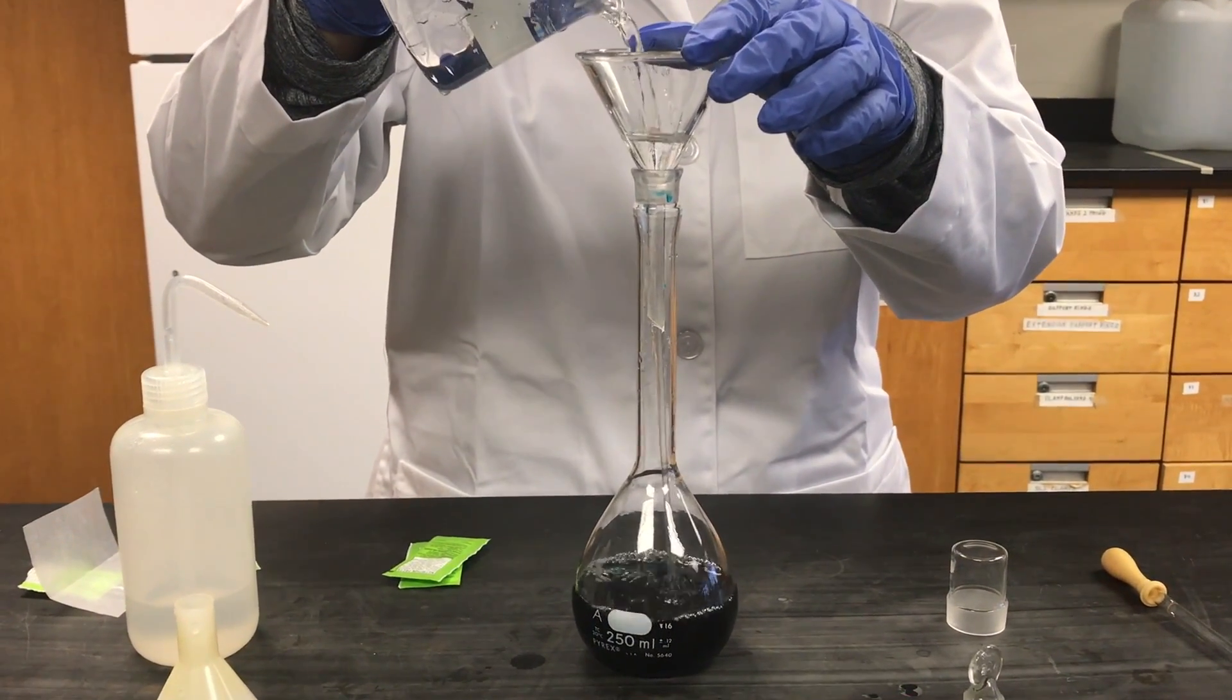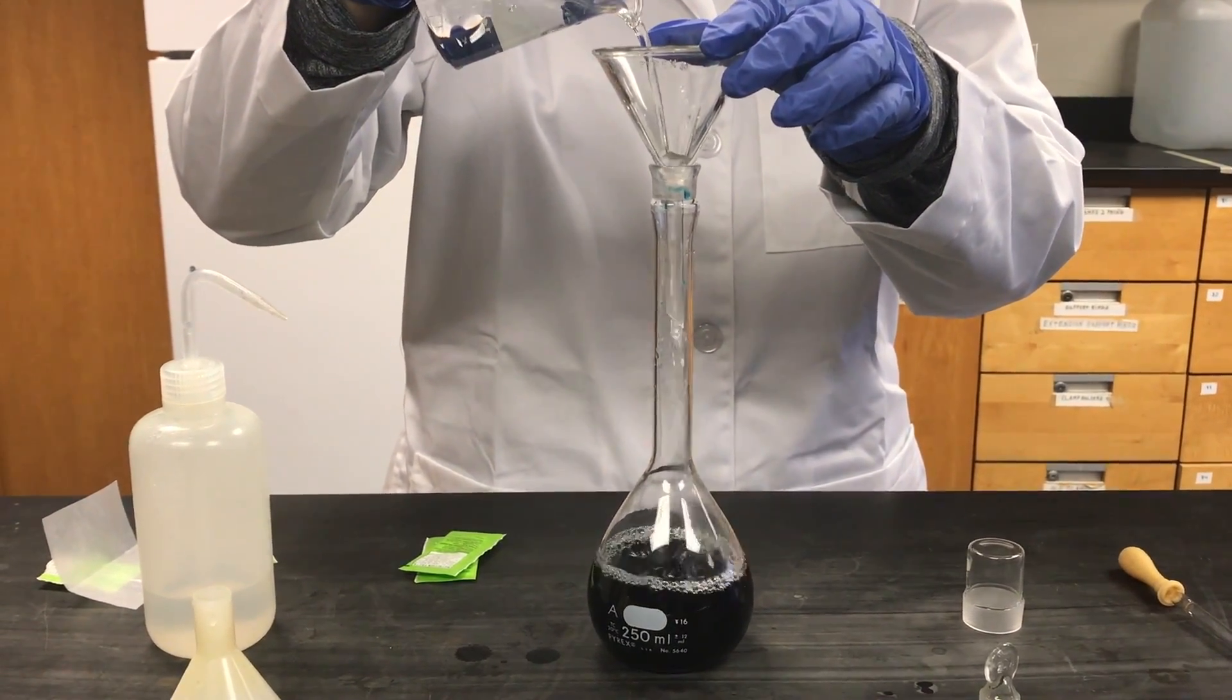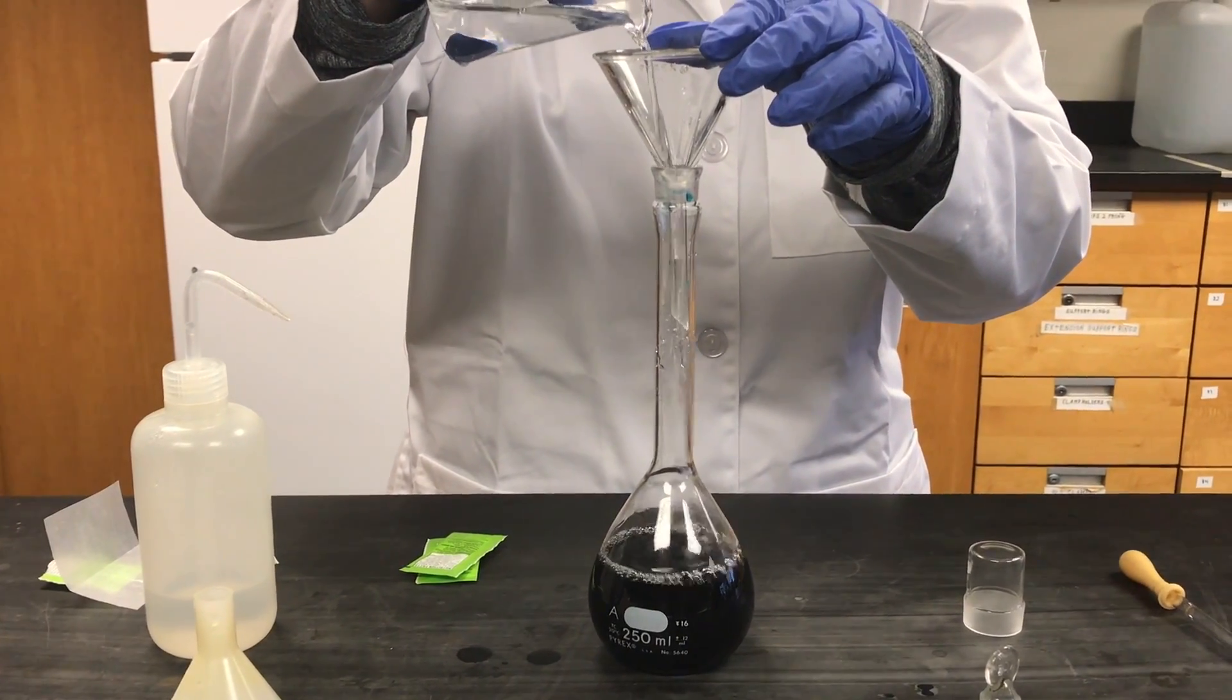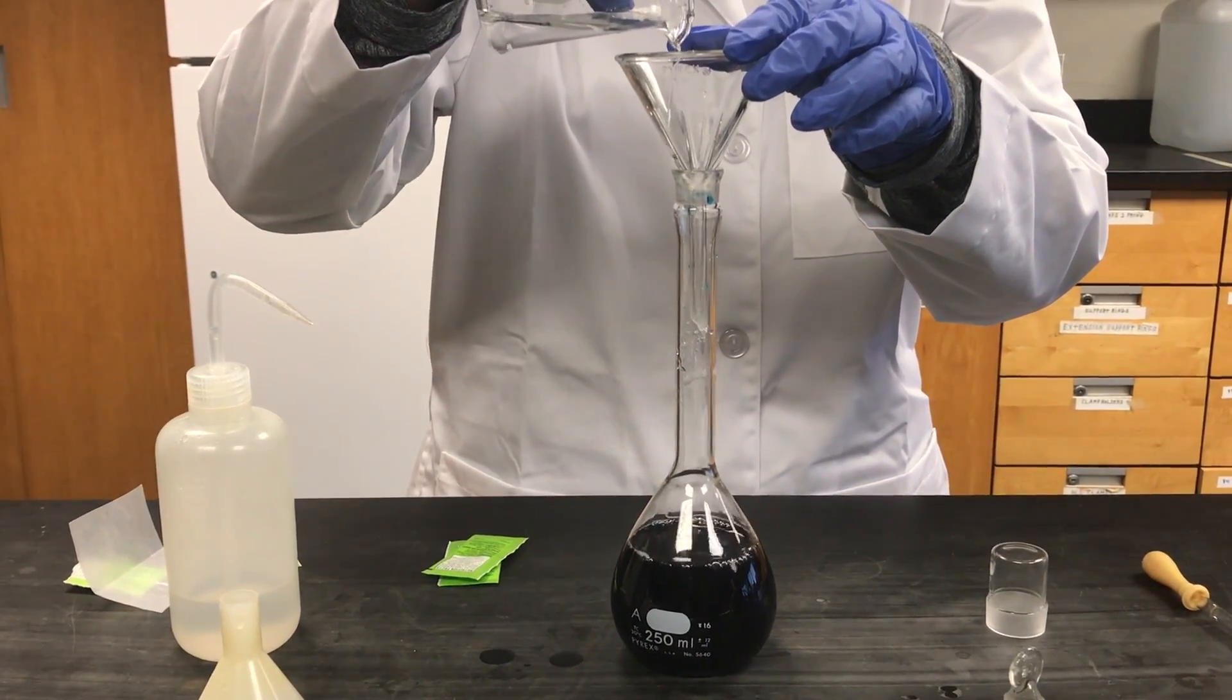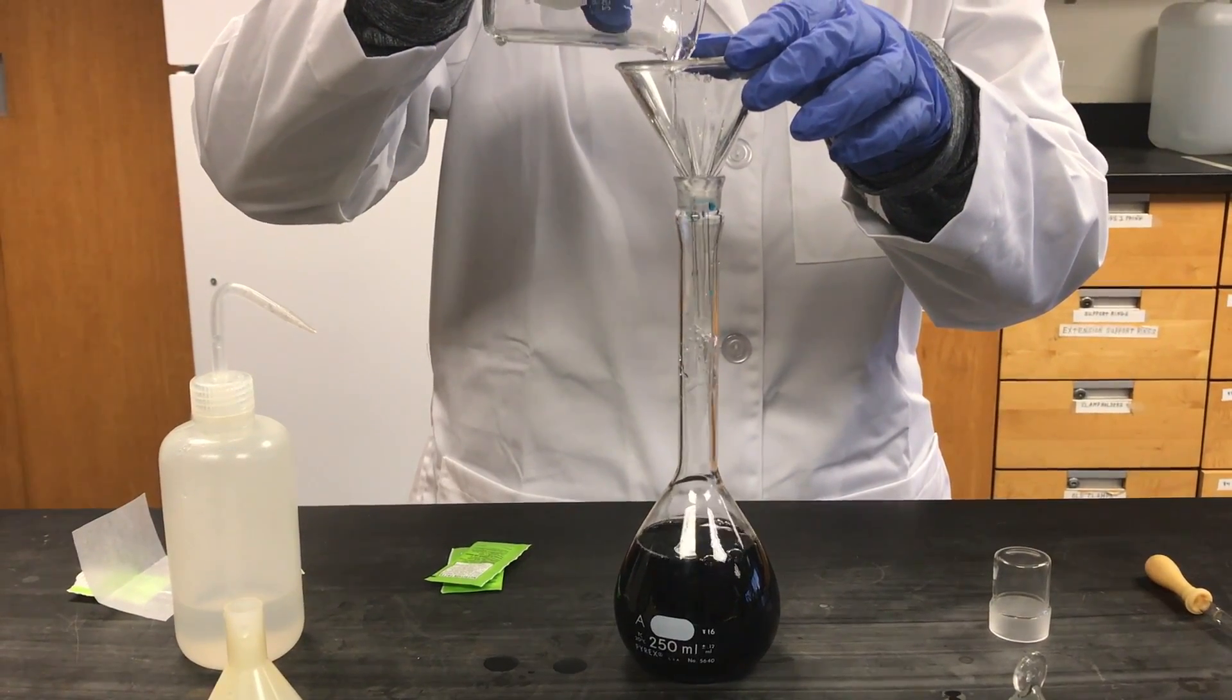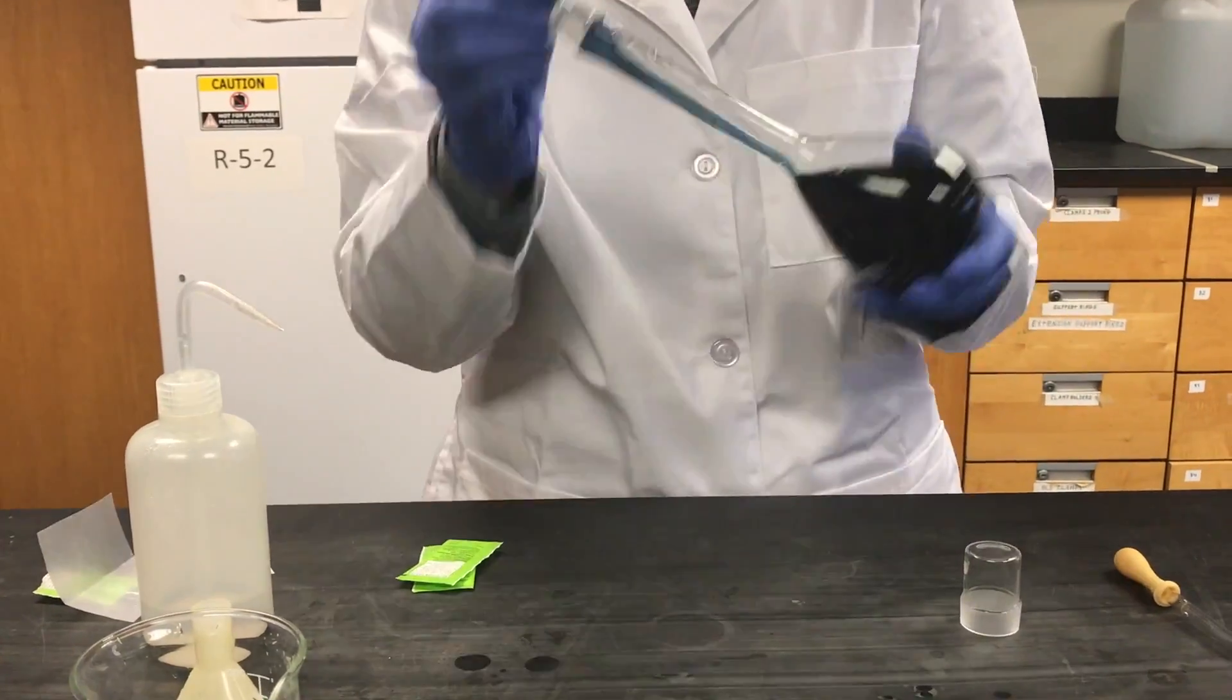Next, fill the volumetric flask up 75% of the way. And mix 20 to 25 times again.